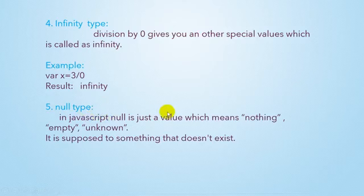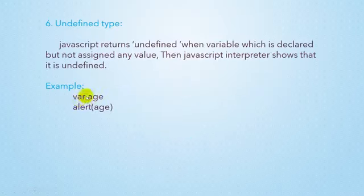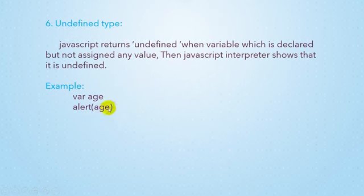Now our last point of this lecture is Undefined data type. What is meant by undefined? As the name says - undefined means we have not defined any value to a particular variable. For example, I have declared a variable called 'var age'. Where age - I declared a variable called 'var age'. So now if I write alert(age), this will display an alert box requesting the value of age, but you have not defined any value.